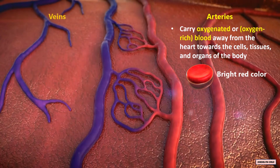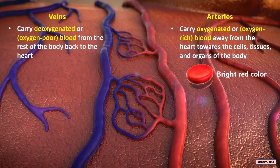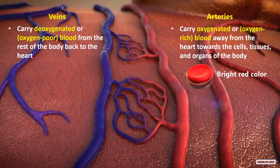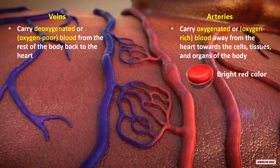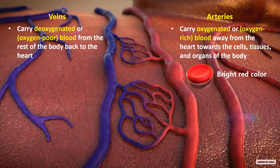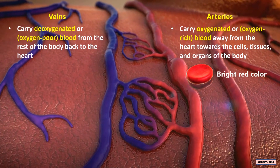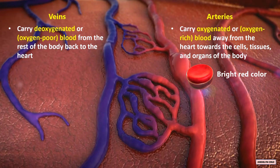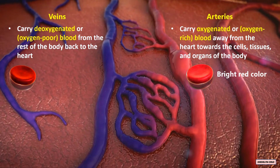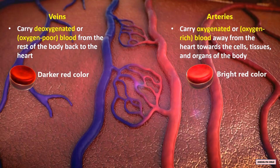Veins carry the deoxygenated or oxygen-poor blood from the rest of the body back to the heart. In your body, oxygen-poor blood has a darker red color.